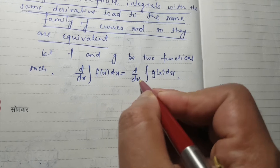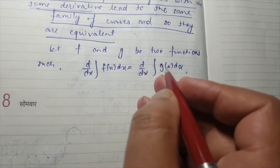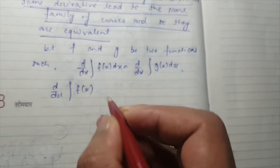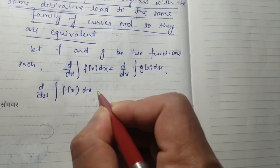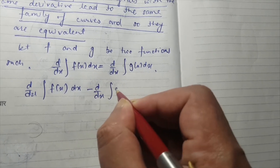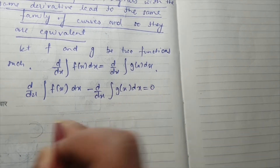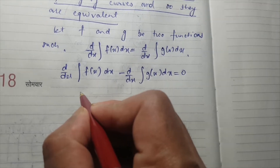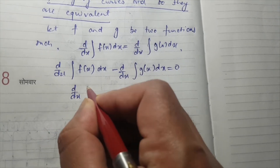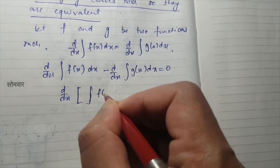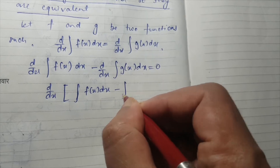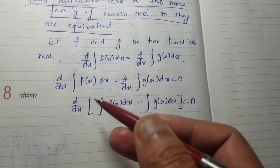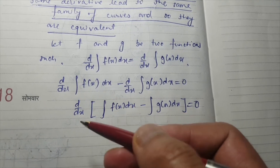First, we bring all quantities to the left-hand side: d/dx of the integral of f(x) dx, minus d/dx of the integral of g(x) dx, equals zero. This can be rewritten as d/dx of [integral of f(x) dx minus integral of g(x) dx] equals zero, because differentiation is linear.